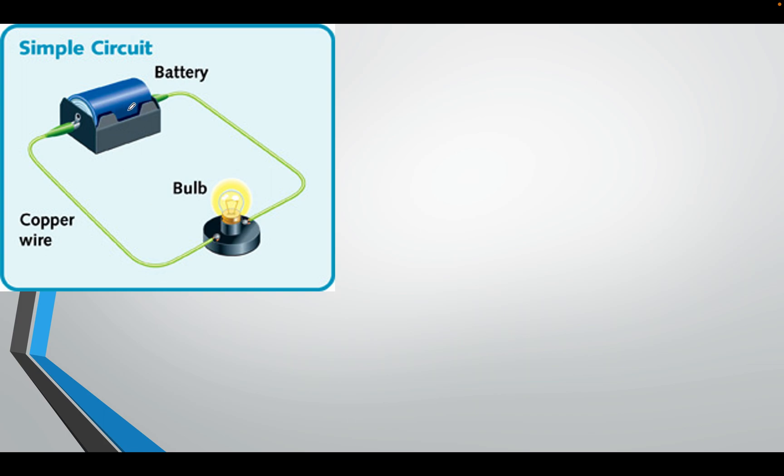So you know what a simple circuit looks like? You have a battery and a bulb and some wires. This is what's needed to have a simple circuit working. This is how a battery would look. This is a circuit diagram and this is how a bulb would look.